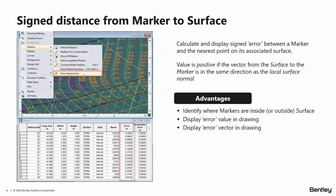A feature that has been requested from a user is to show the sign of the distance from a marker to its surface. The value is positive if the vector from the surface to the marker is in the same direction as the local surface normal. This enables you to identify which markers are inside and which markers are outside the surface. It's also possible to show the error and the vector in the drawing view.